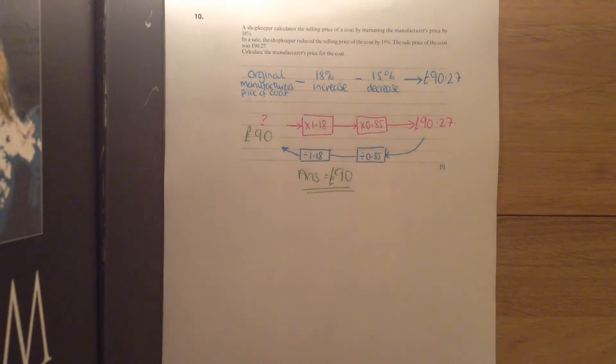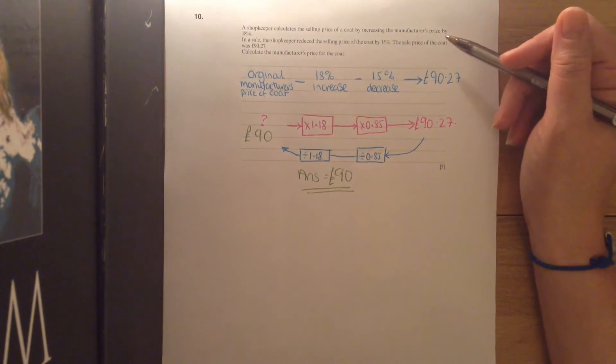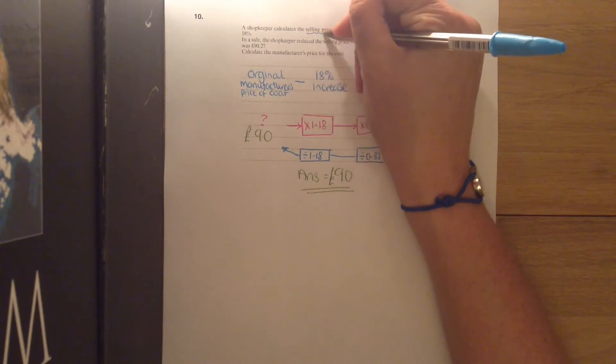If you read the question, you'll see that the shopkeeper had a selling price—we don't know that.